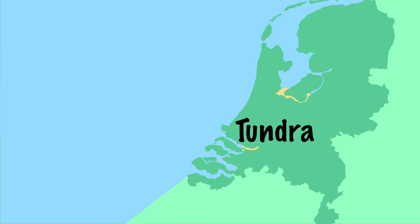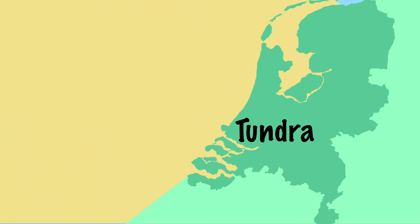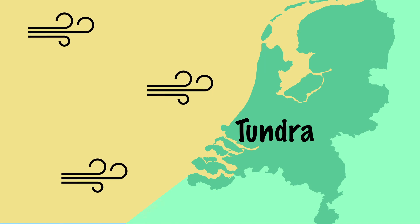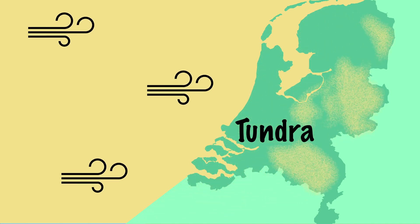From the North Sea area, which was dry, sand from the seabed was blown towards the Netherlands, creating a layer of sand in many areas. In Limburg, loess was deposited locally. The most important remnant of the landscape of the Weixalian is therefore the layer of sand.